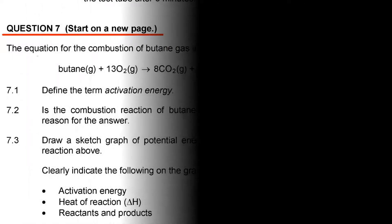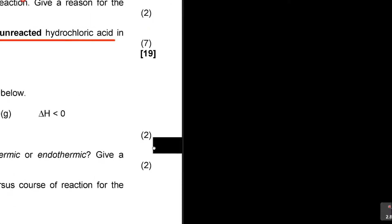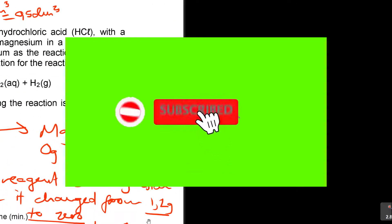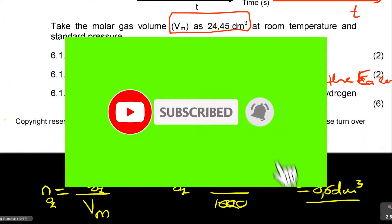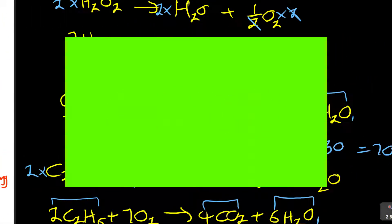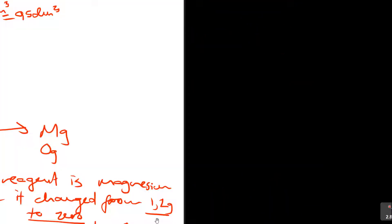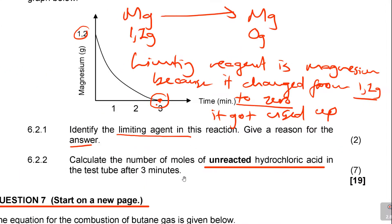Question 7. It says the equation for the combustion of butane - combustion is burning - of butane is given below. I think I did actually, when I was demonstrating this, this is ethane, you know, when I was saying C2H6 plus O2, this was actually ethane, but now they are talking about butane here.